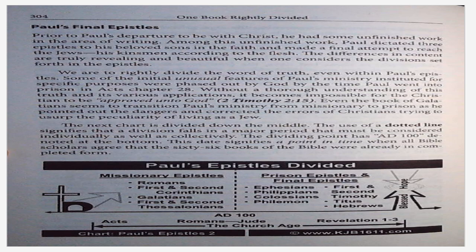Prior to Paul's departure to be with Christ, he had some unfinished work in the area of writing. Among this unfinished work, Paul dictated three epistles to his beloved sons in the faith and made a final attempt to reach the Jews, his kinsmen according to the flesh. The differences in content are truly revealing and beautiful when one considers the division set forth in the epistles. We are to rightly divide the word of truth even within Paul's epistles. Some of the initial unusual features of Paul's ministry instituted for specific purposes were phased out by God by the time Paul went into prison in Acts chapter 28. Even the book of Galatians seems to transition Paul's ministry from missionary to prison as he pointed out the dangers and corrected the errors of Christians trying to usurp the peculiarity of living as a Jew.